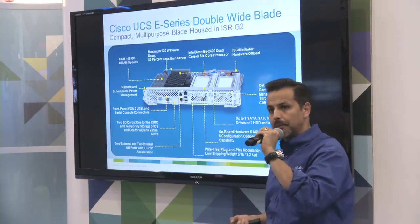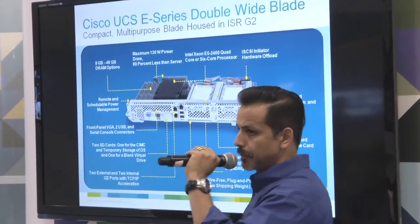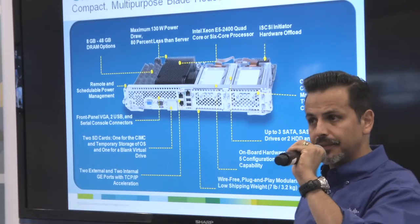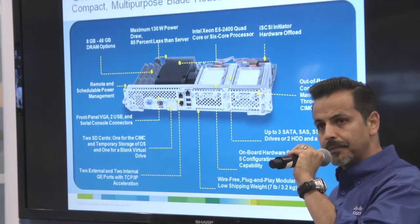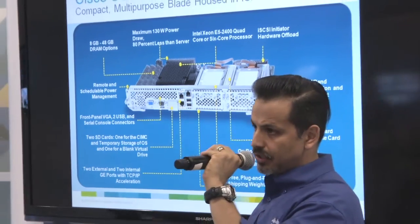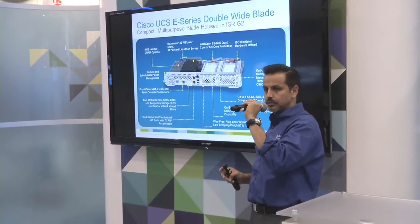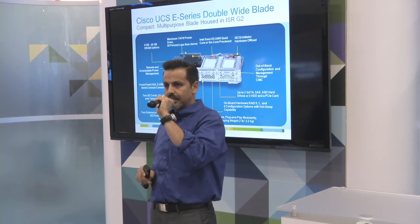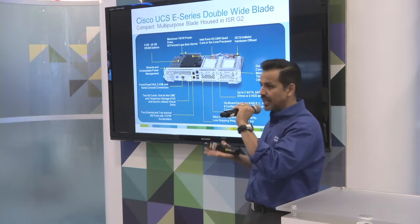The next blade is our double wide, which comes in two flavors. Both support up to 48 gigs of memory and up to three terabytes of storage with three 2.5-inch disks. We also support a quad-core Intel-based processor and a six-core processor. So the compute for a branch office is pretty powerful. The single wide supports up to two terabytes of storage.